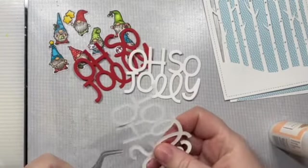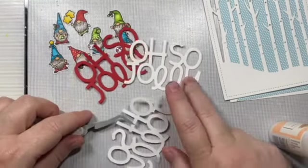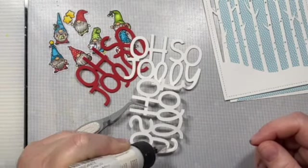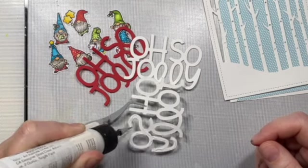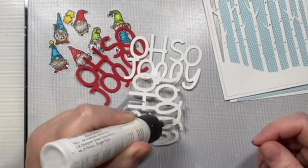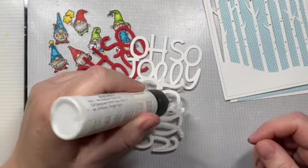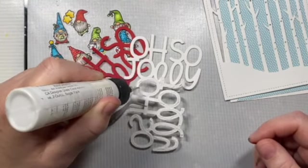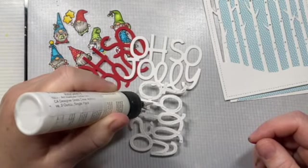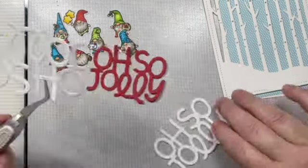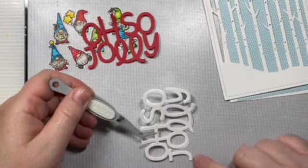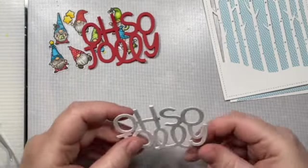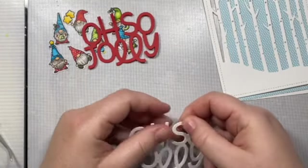So I've cut out this Oh So Jolly die cut three times, twice on white and once on red. So to start, I am going to glue the two white pieces together and I'm just going to glue them down one on top of the other. And then we are going to add the red layer on top of that. And we're going to stagger it a little bit to one side so that you see some of the white peeking through. So it just looks like a really cool candy cane pattern for our sentiment. And I'll show you how that goes in a second.